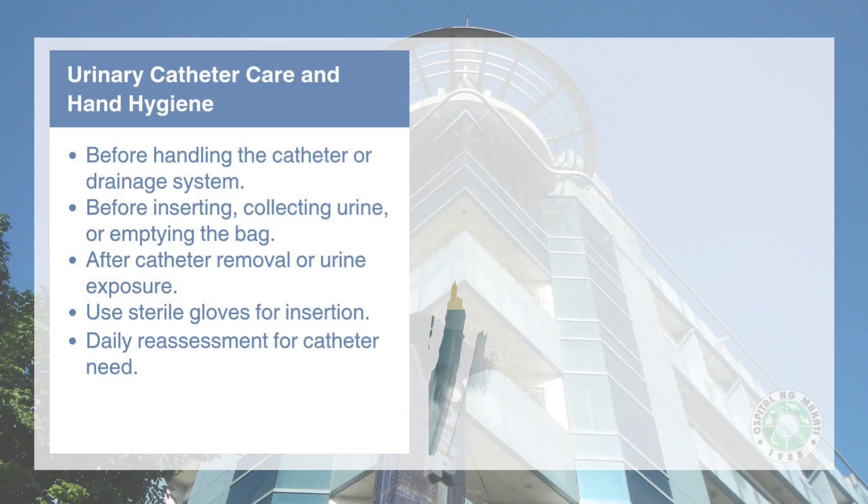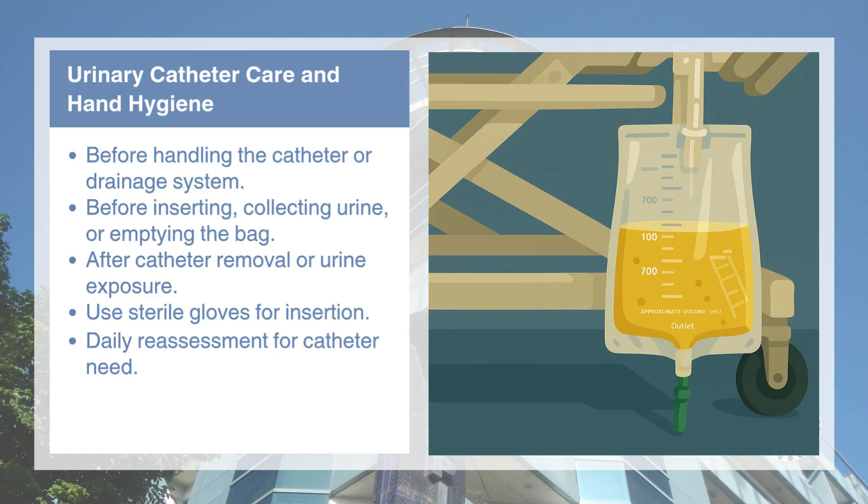Always perform hand hygiene before and after manipulating urinary catheters to prevent urinary tract infections. This includes before insertion, when collecting samples, or emptying the drainage bag. Proper catheter care reduces the risk of catheter-associated urinary tract infections (CAUTIs), one of the most common healthcare-associated infections.